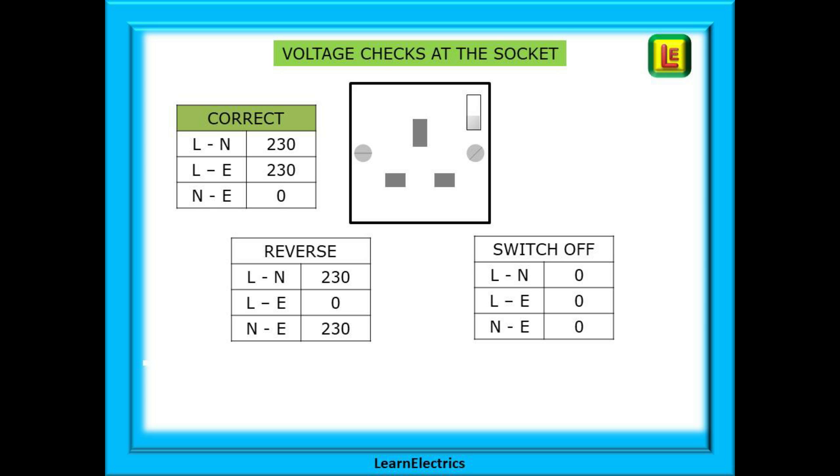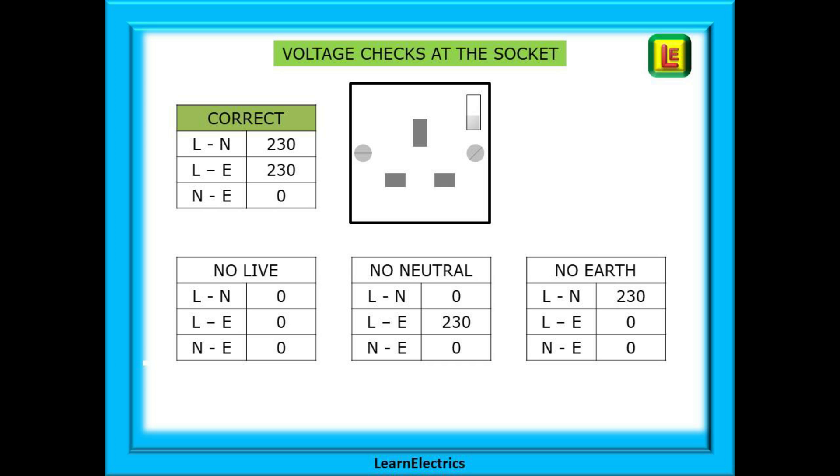A reverse wired socket where neutral and live have been crossed over will give the results as shown. Neutral is now live with 230 volts on it. The customer won't know—all the household equipment will still function. And if the switch, if there is one, is turned to off, then there should be no voltage output.